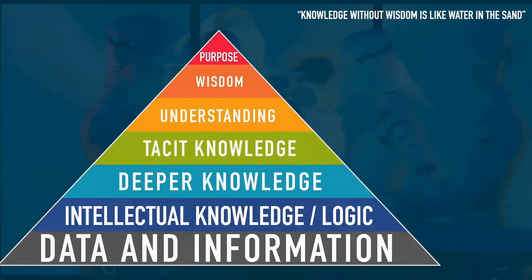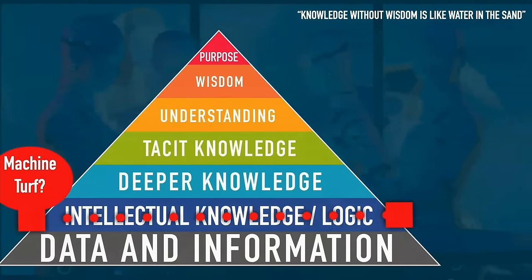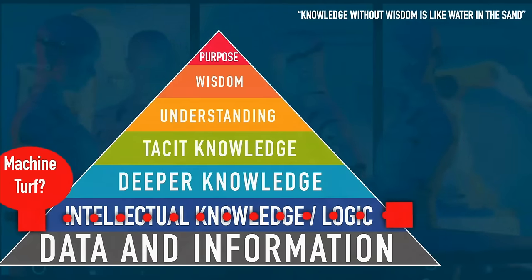We're moving into a future where robots — software and hardware — are everywhere and getting cheaper and cheaper. The pyramid of what we do is changing rapidly. Data and information — that's machine turf, and that's been clear for quite some time. Intellectual knowledge, logic — machines can do that. Our turf is up here: human-only turf — very important not to be distracted by this. We have to change our entire educational system to focus on the human-only turf, because logic and information? Bots do that pretty well.